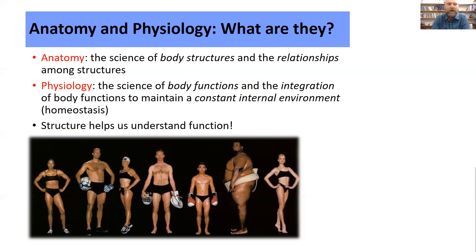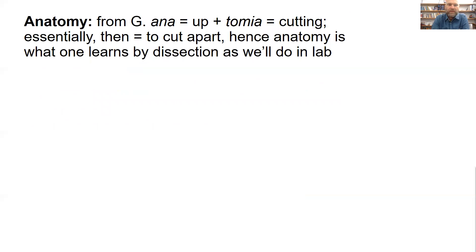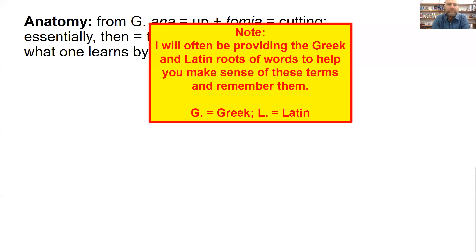Our class this semester focuses on human anatomy. Anatomy comes from the Greek, literally translating as 'cutting up.' What we know about the human body generally comes from dissecting cadavers and learning how all the pieces are connected. We'll do some of that in lab — unfortunately not with human cadavers, but we will be conducting dissections and looking at actual parts of actual bodies. I will often provide the Greek and Latin roots of words throughout class to help you make sense of them, as this course involves a lot of memorization. You'll see abbreviations G for Greek and L for Latin.